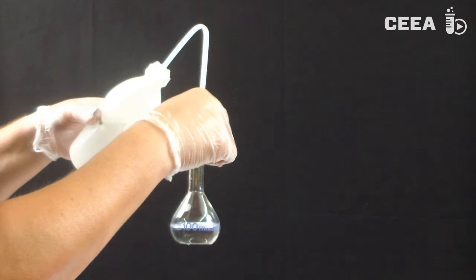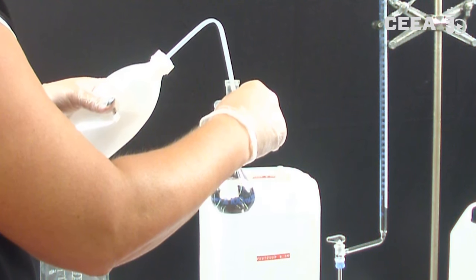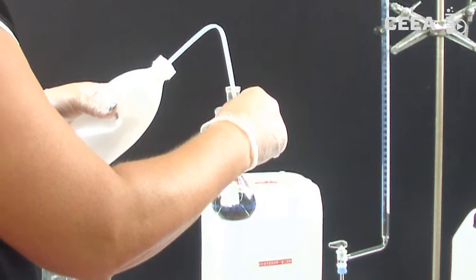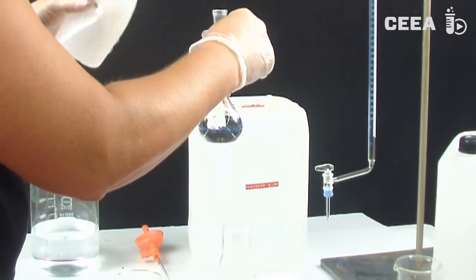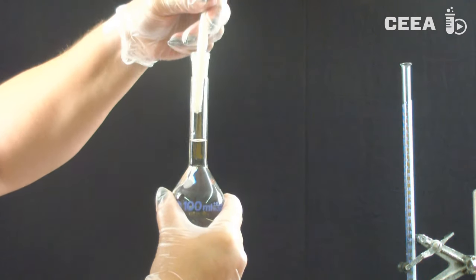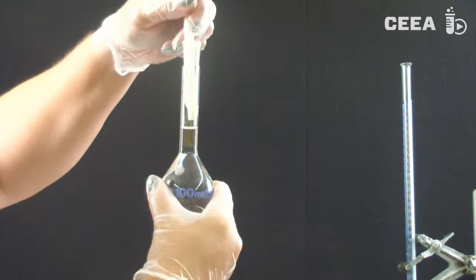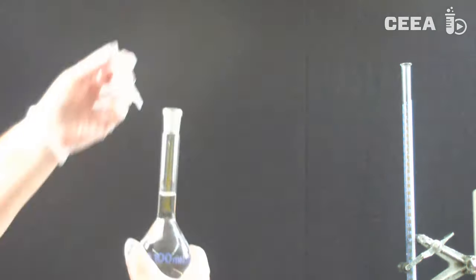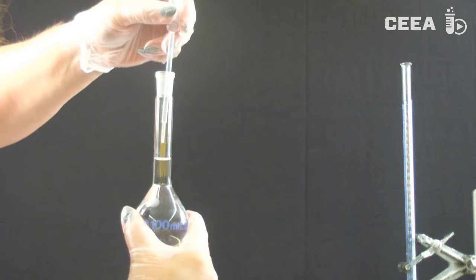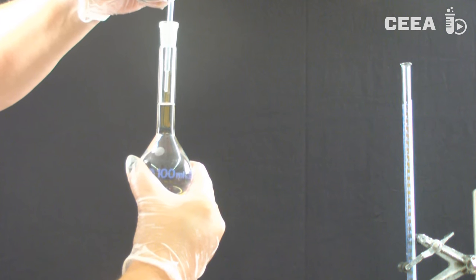Finally, the sample in the volumetric flask has to be diluted by addition of demineralized water. We carefully add the final drops until the lowest point of the meniscus reaches the mark.